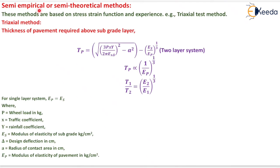Now next method is the semi empirical or semi theoretical methods. These methods are based on stress strain function and experience that is triaxial method. Now according to the triaxial method thickness of pavement required above subgrade layer can be determined by using the formula. Pp will be equals to under root of 3pxy upon 2 pi es into delta whole square minus a square minus es upon ep to the power 1 by 3. Now tp is inversely proportional to ep so it will be equals to t1 upon t2 is equals to e2 upon e1 to the power 1 by 3. For single layer system ep equals es where P equals wheel load in kg, x equals traffic coefficient, y is rainfall coefficient, es is modulus of elasticity of subgrade in kg per centimeter square, delta is design deflection in centimeter, a is radius of contact area in centimeter and ep is modulus of elasticity of pavement in kg per centimeter square.